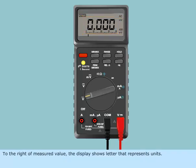To the right of measured value, the display shows letter that represents units. The measurement range is shown at the lower right corner.